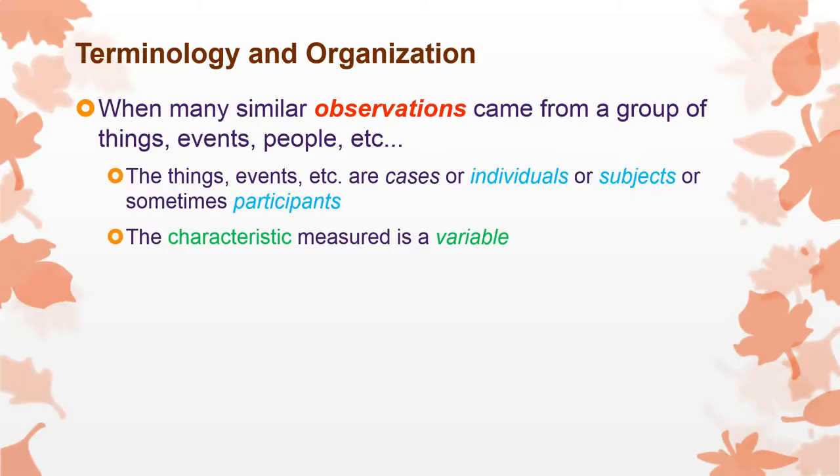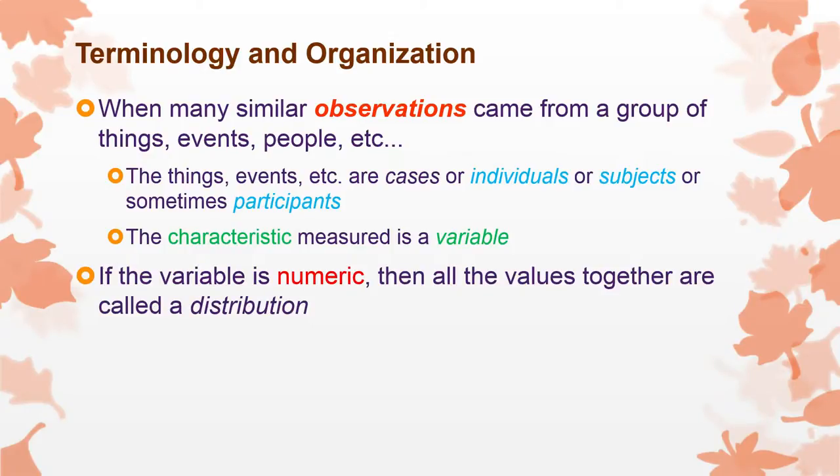The characteristic that we're measuring there is called a variable. We talked about that a little bit two lectures ago. One characteristic measured across a whole bunch of fairly similar individuals is a variable. If the variable is measured on a numerical scale, I don't actually know the difference between numeric and numerical so I will use them interchangeably.